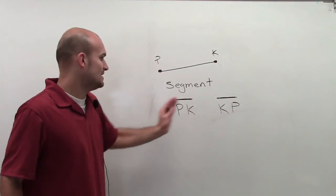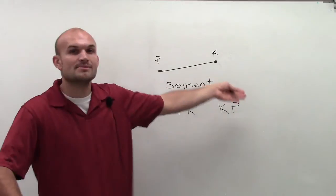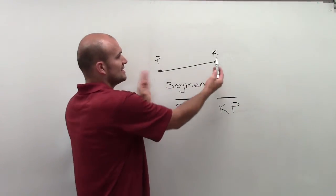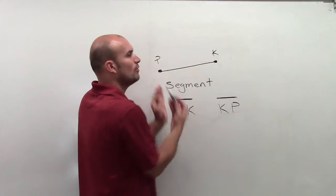So therefore, we can label it PK or KP, as order doesn't matter. But rather than putting the little arrows like we did for a line, since we're only taking the distance between our two points, we're just going to draw a straight line segment up top.